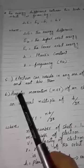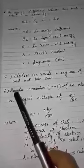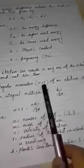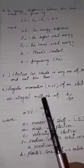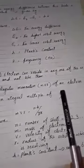Then we come to the sixth assumption of Bohr, that is angular momentum mvr of an electron is an integral multiple of h by 2π.